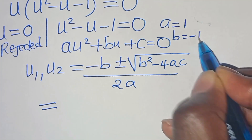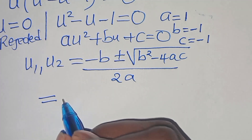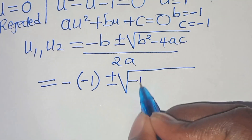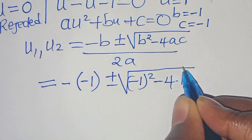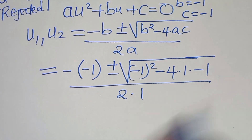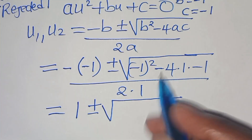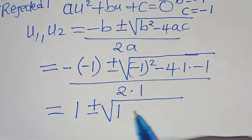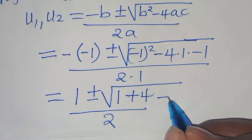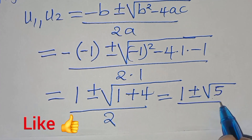We have b = -1 and c = -1. So let's substitute a, b, and c: we have minus(-1) plus or minus the square root of (-1)² minus 4 times 1 times (-1), all divided by 2 times 1. So minus times minus 1 is 1, plus or minus the square root of 1 plus 4, divided by 2.